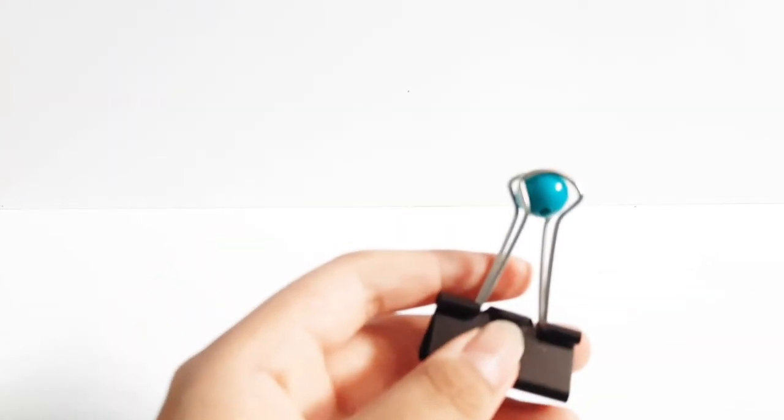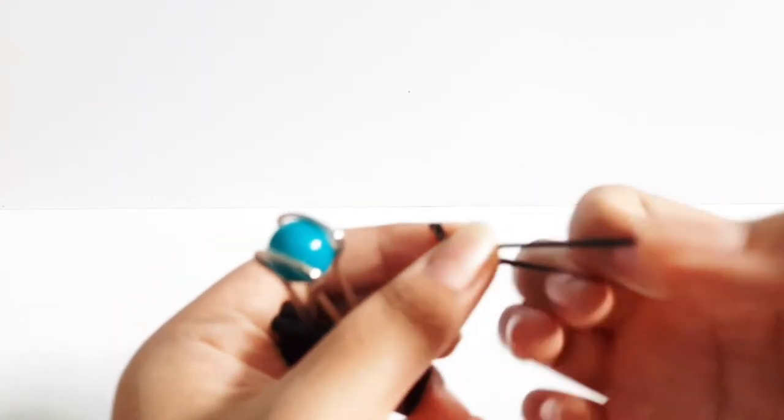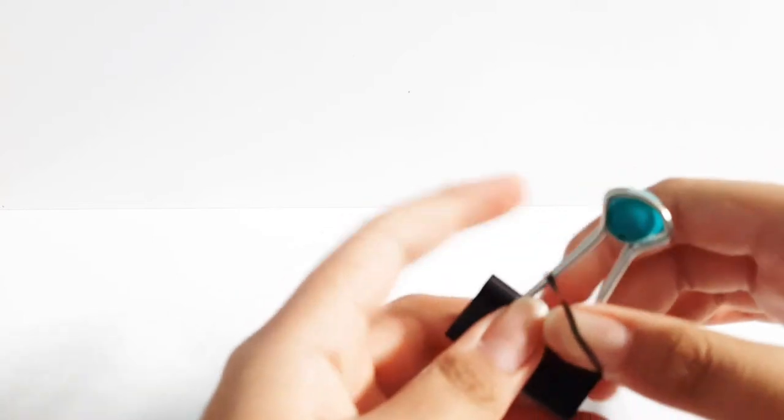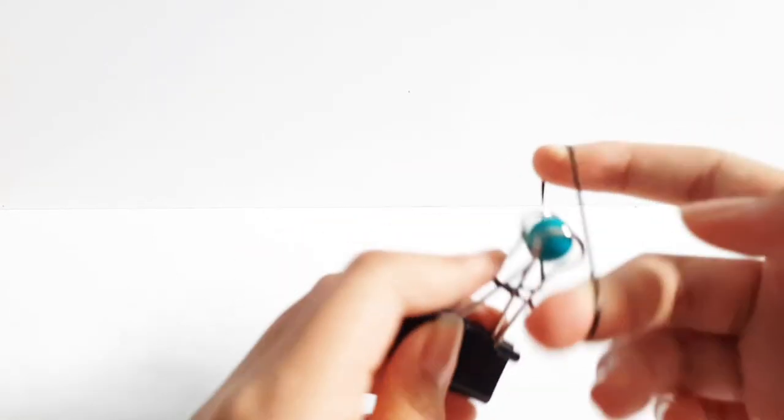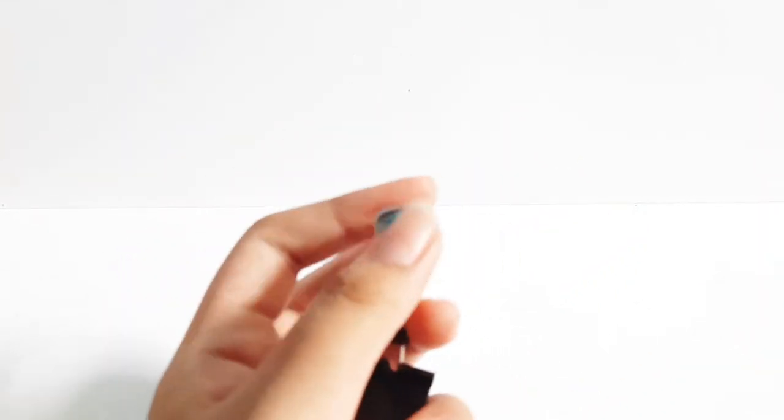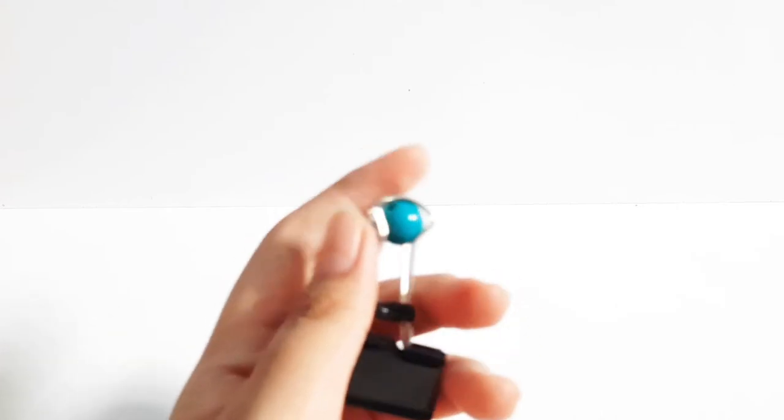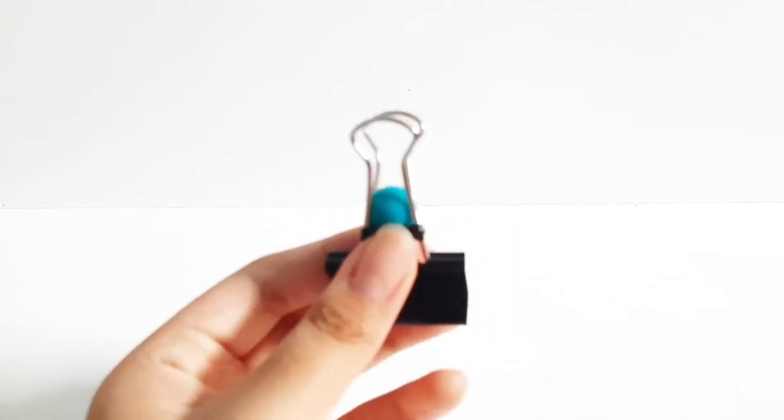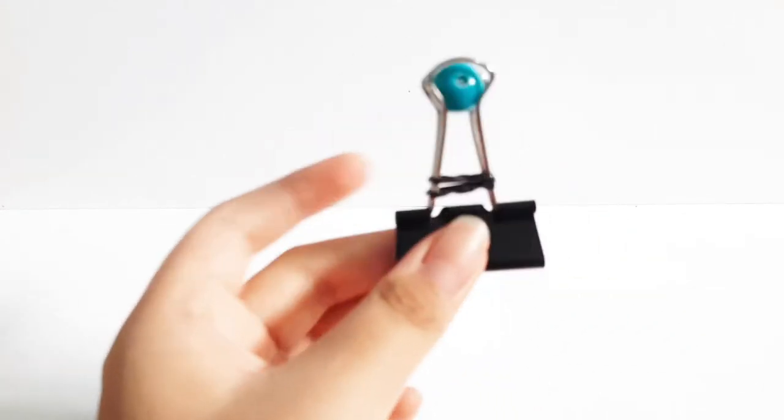Take your rubber band and twist it on the binder clip just like this. How to play with this fidget: you can roll the bead like this, or you can roll it here, and you can push it down and push it back up. Let's move on to the next fidget.